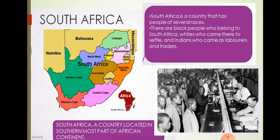South Africa is a country that has people of several races. There are black people who belong to South Africa, whites who came there to settle, and Indians who came as laborers and traders.